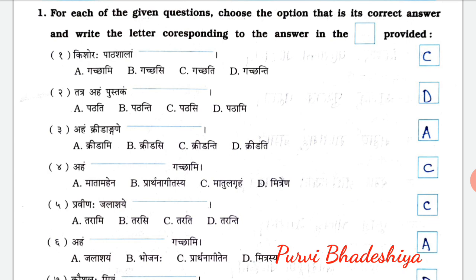Fourth: Aham blank Gachami — the correct answer is C, Matul Kruham. Fifth: Prameenaha Jalasaya blank — the correct answer is C, Tarati.